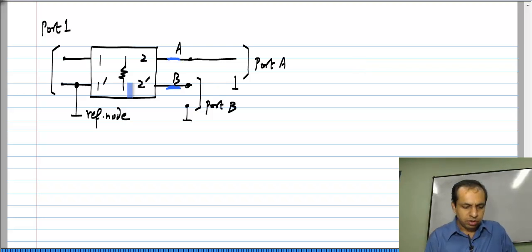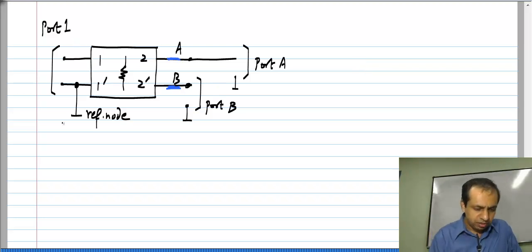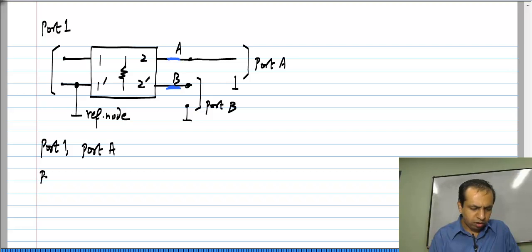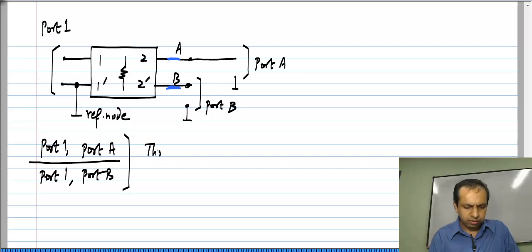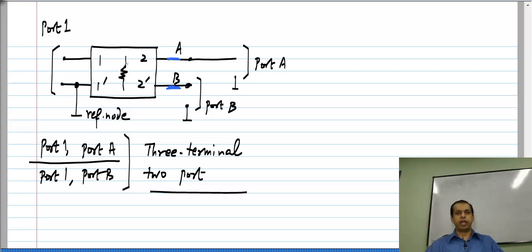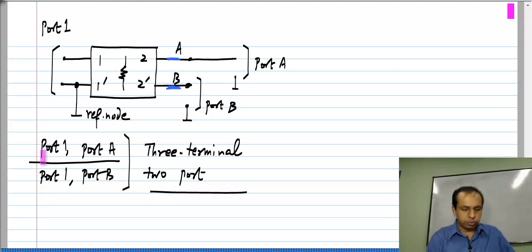Essentially I have defined three ports with a common terminal: 1-prime is the common terminal. The port between terminal 1 and the reference node is port 1; the port between terminal 2 and the reference node is port A; and the port between terminal 2-prime (B) and the reference node is port B. So if I take any two of these — say port 1 and port A, or port 1 and port B — each of these is a three-terminal two-port. The network is resistive, and I can define the ports anywhere I want.